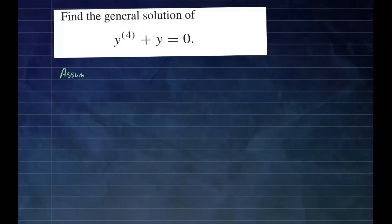Now let's solve this fourth order linear differential equation — homogeneous, constant coefficient. We're going to assume the solution form is e to the rt. By assuming that, we know the characteristic polynomial of this differential equation would be r to the fourth plus one equals zero. Now we need to find the roots of this characteristic polynomial.